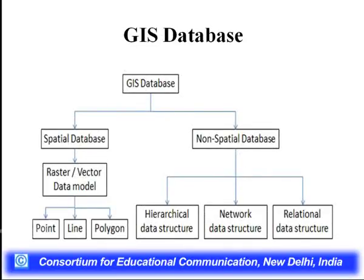We have spatial databases — raster and vector. Many software programs are related to raster databases. Vector denotes objects; raster denotes the grid. Vector is important for data capture and storing, which can then be analyzed through raster or grid systems. We have point, line, polygon, and area features, and also non-spatial databases including hierarchical, network, and relational data structures. Examples: city location as point, rivers and transport networks as line, district and village boundaries as polygon/area.